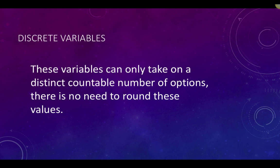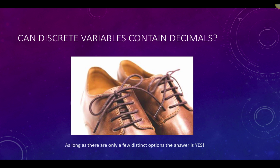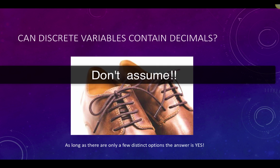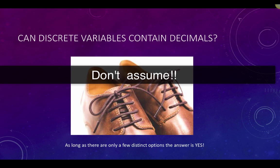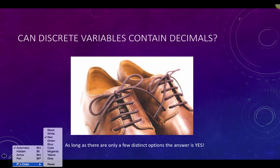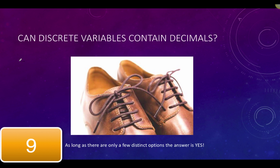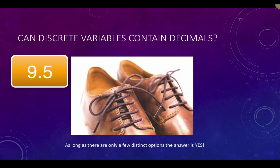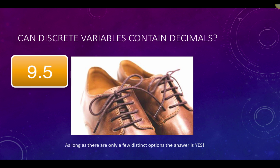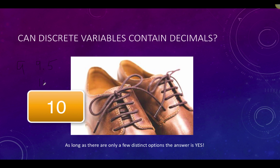There are only a few discrete options. Now, one common misconception relates to decimals. Many assume that any variable or any value presented with a decimal must be continuous, while any value without a decimal is discrete. But consider something like shoe size. You go into the store to purchase a pair of shoes, and you have only a few distinct options that you can purchase. You can purchase a size 9, a 9.5, a 10, etc.